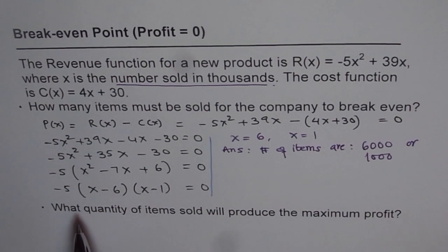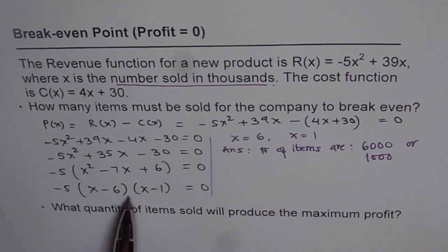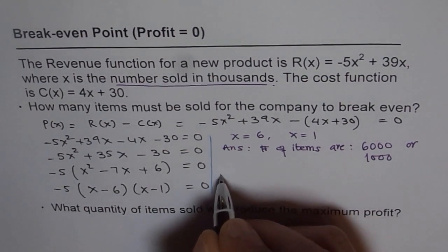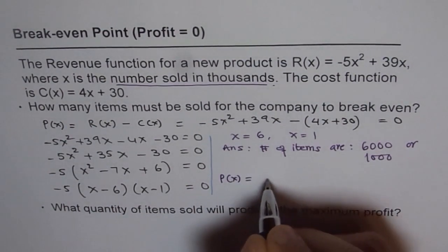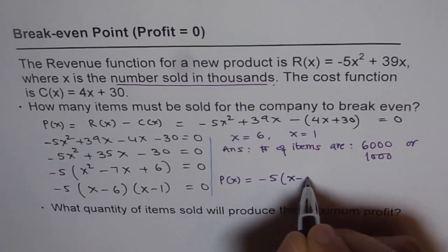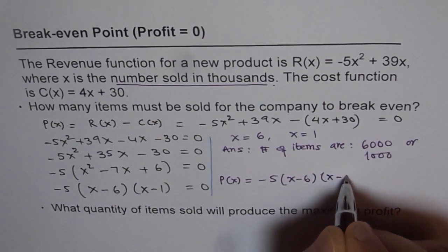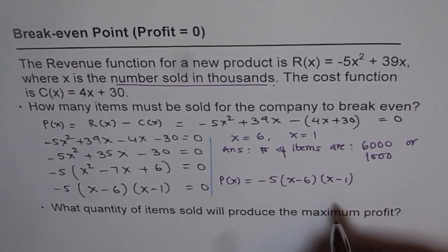Now, part 2 of the question is, what quantity of items sold will produce maximum profit? Now, maximum profit is, this is a profit function. So let us write down the profit function once again. We have profit function equals minus 5(x minus 6)(x minus 1). So that is the profit function.